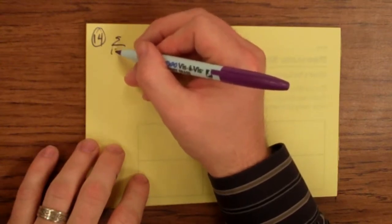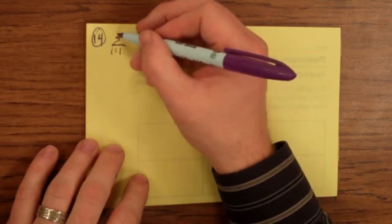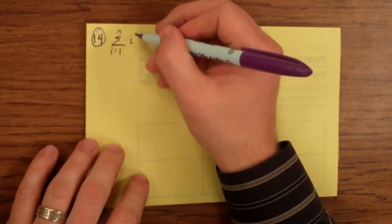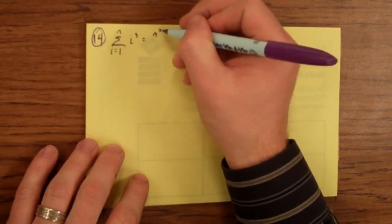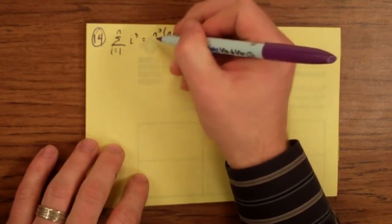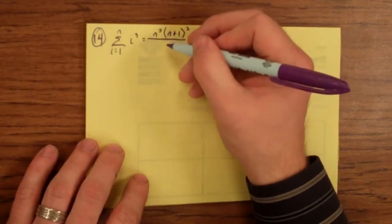From i equals 1 to n of i to the third equals n squared times n plus 1 squared over 4.